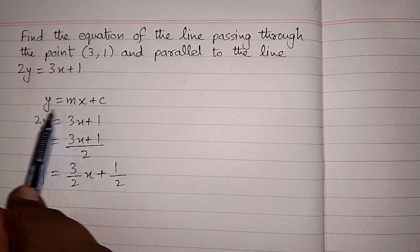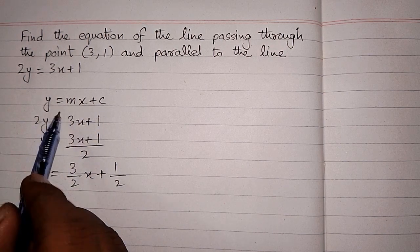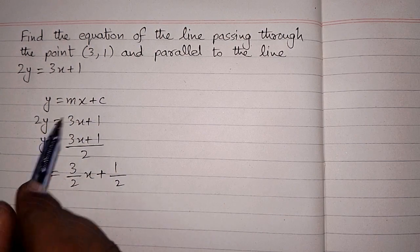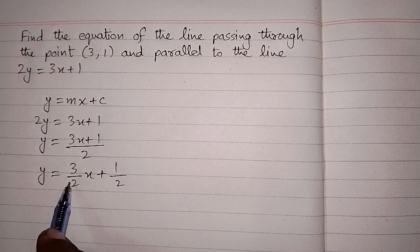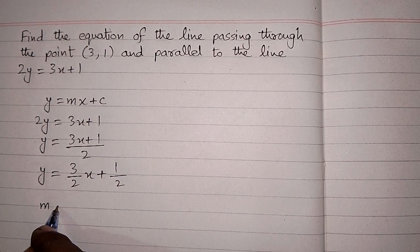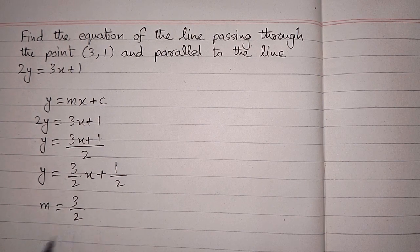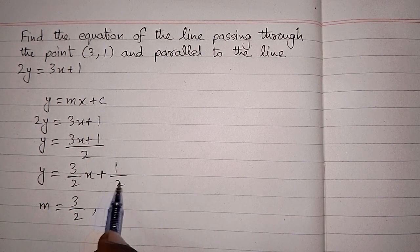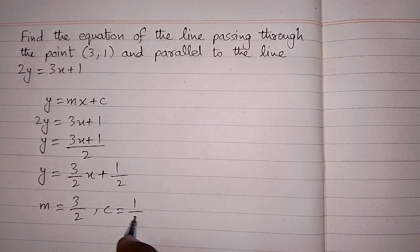Now we compare this equation with y = mx + c to find the values of m and c. The coefficient of x is m, and here it is 3/2, so m = 3/2. The constant term is c, and here it is 1/2, so c = 1/2.